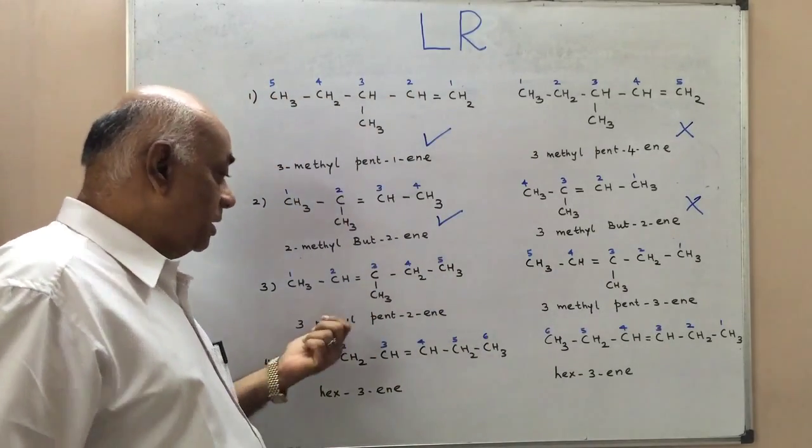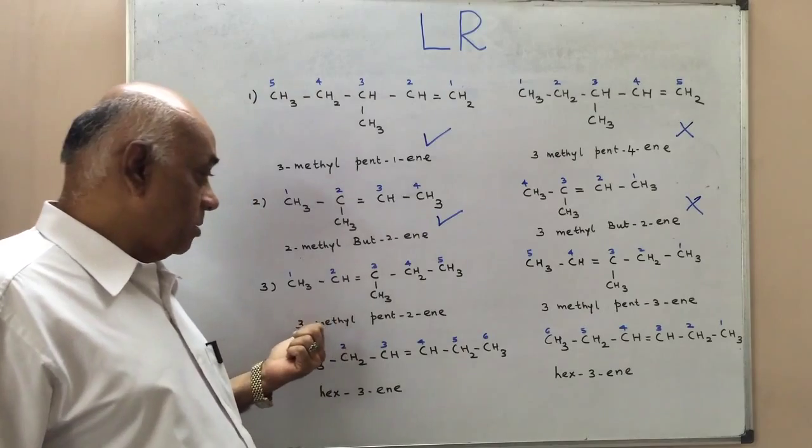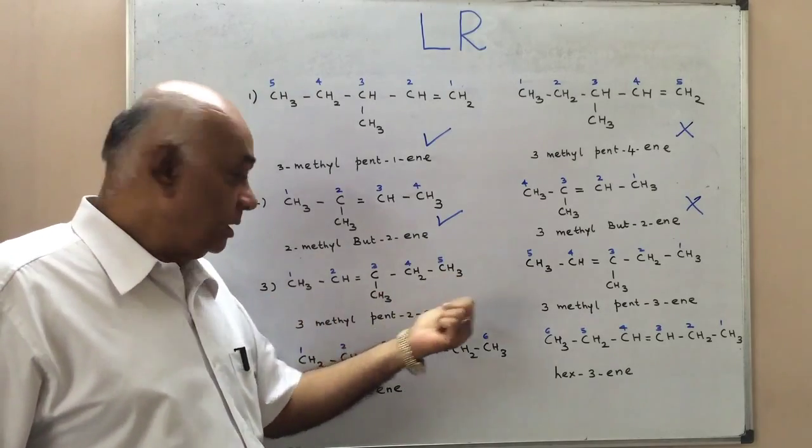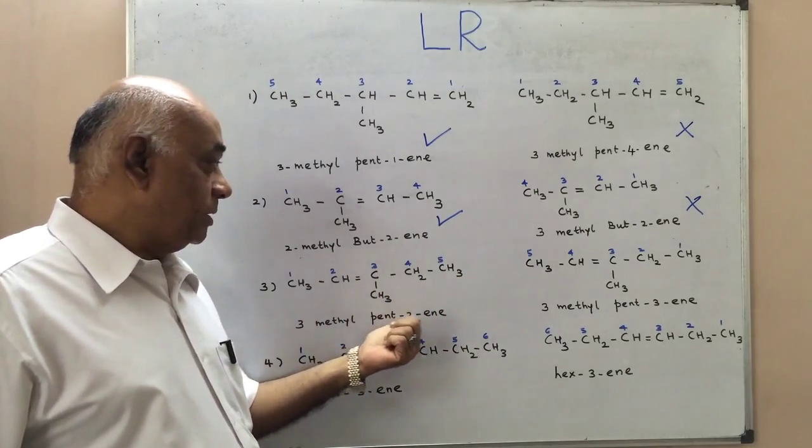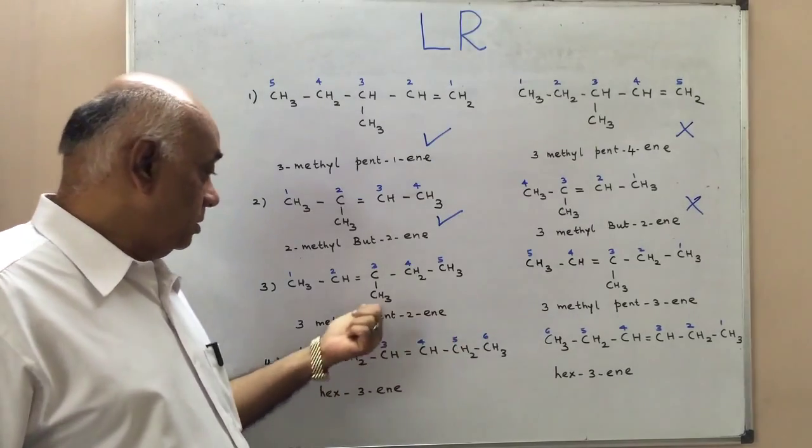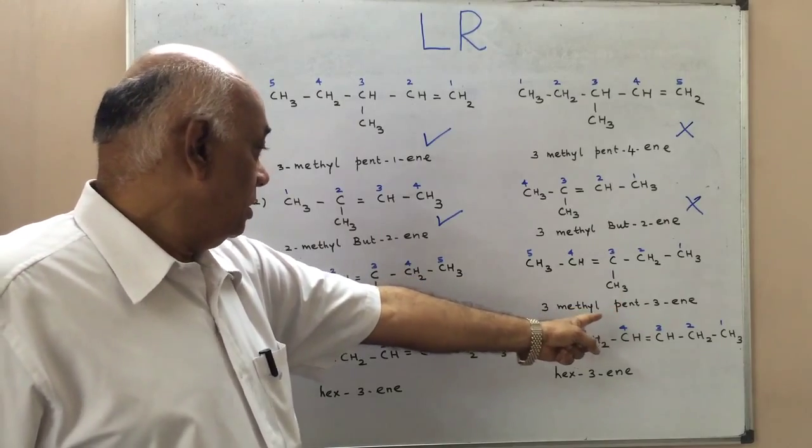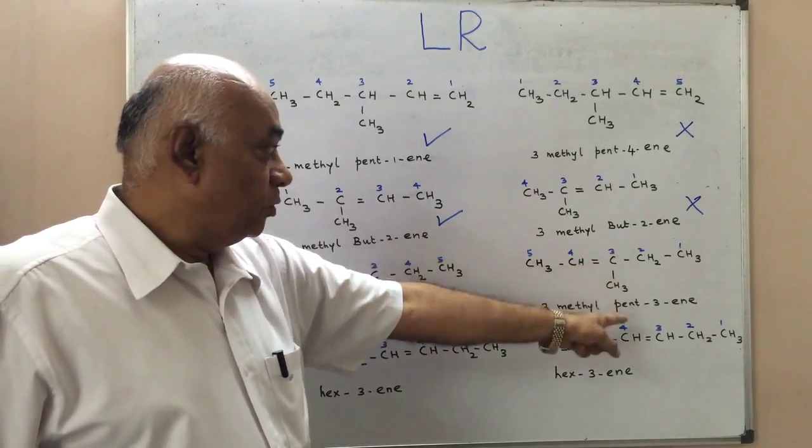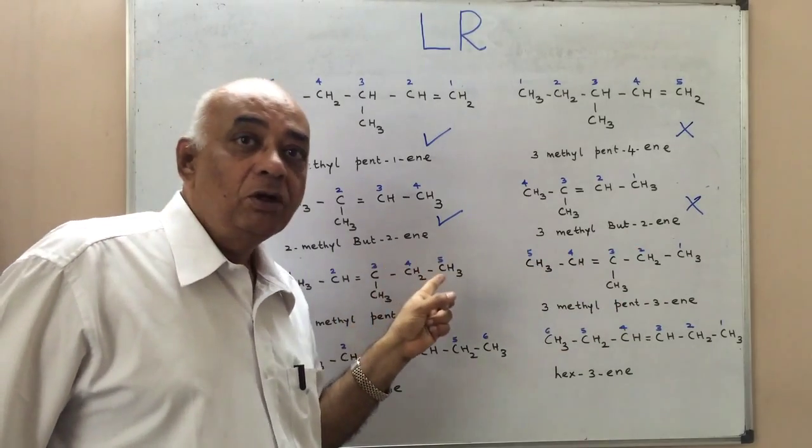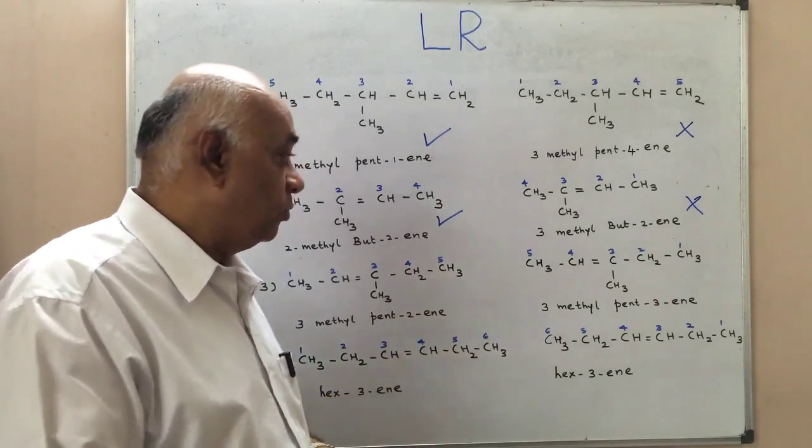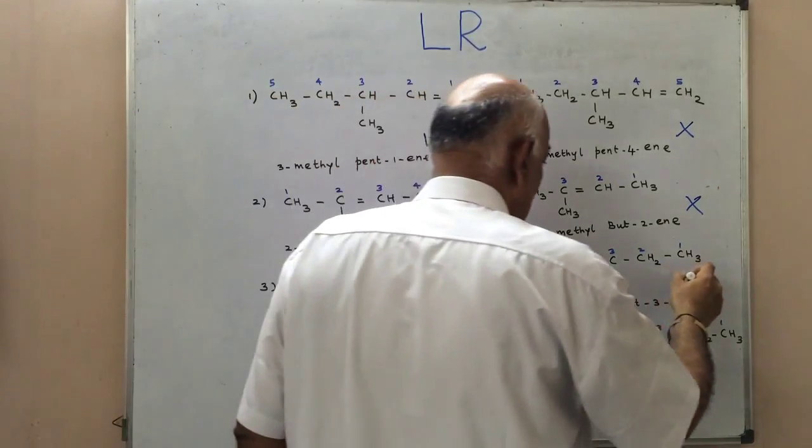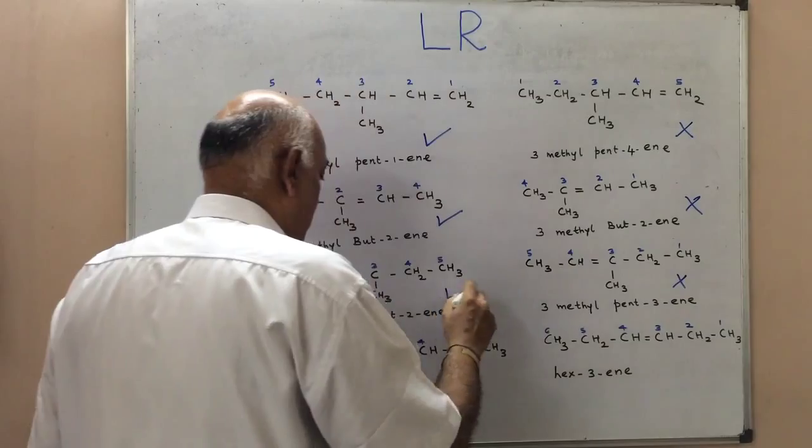Similarly, we could study and inspect the third example. The same form of numbering. This would be pent-2-ene with 3-methyl attached there. In that case, it would be 3-methyl-pent-2-ene if the numbering is done from right to left. And therefore, again, this would be incorrect.